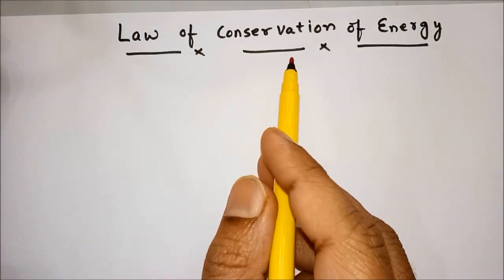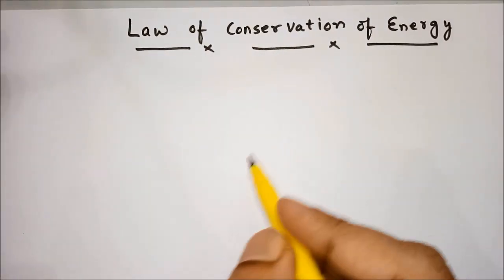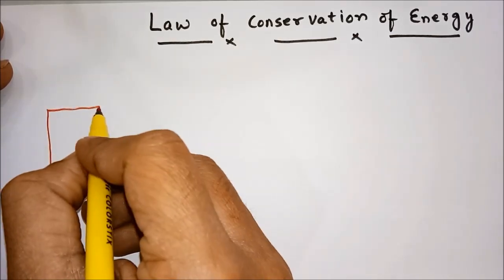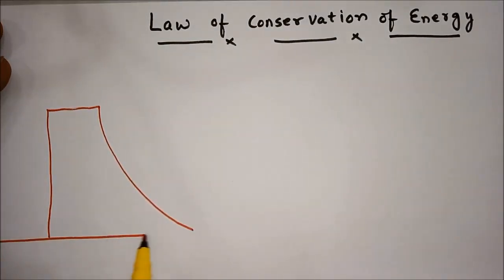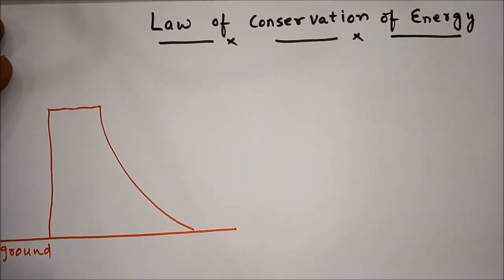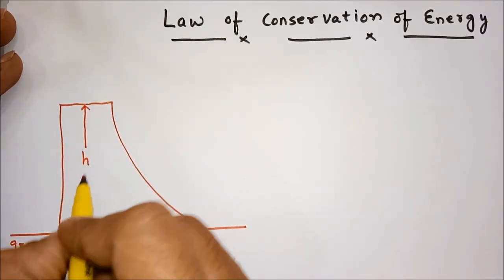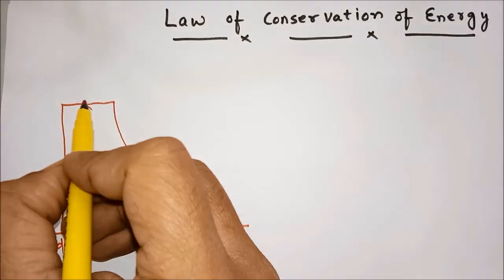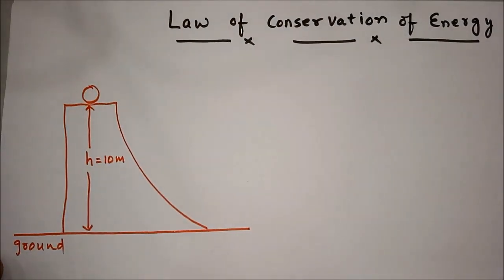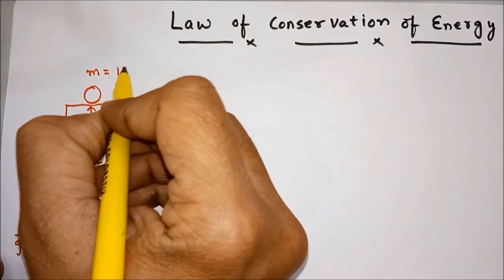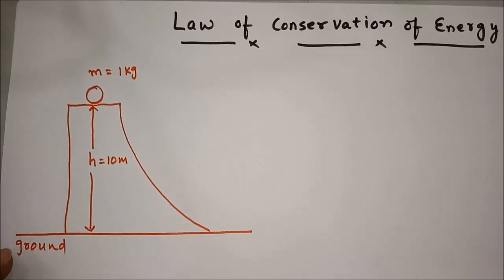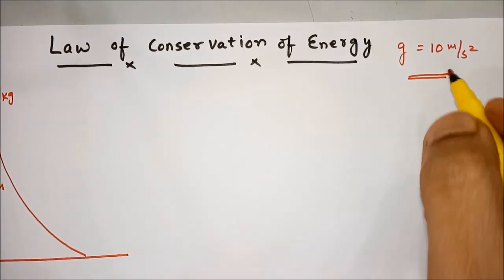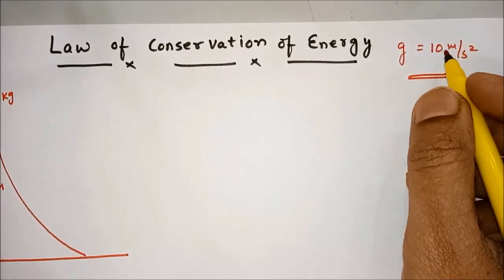Hello everyone. Let us discuss the law of conservation of energy with a small example. Here we have a tall structure with an inclined plane. This is the ground. This structure is say h meters high — consider this to be 10 meters. Now there is a small ball placed at the top of this structure. The mass of this ball is say 1 kilogram. Let us consider the acceleration due to gravity g to be 10 meter per second square — precisely it is 9.8 but 10 is more suitable for doing numericals.